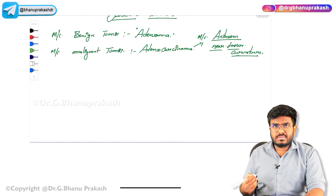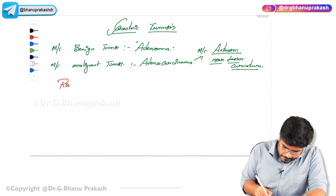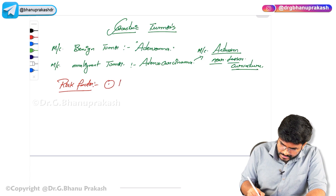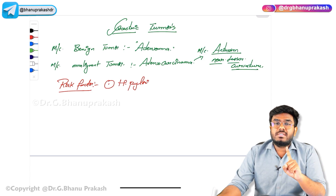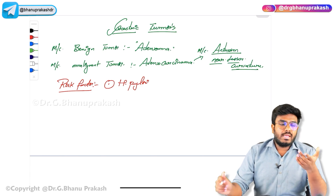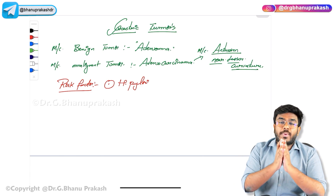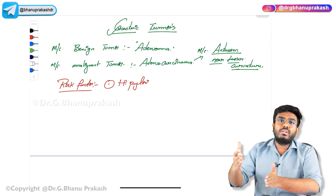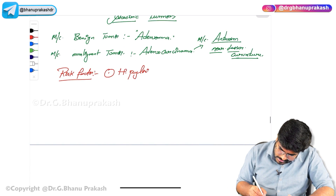Let's discuss why cancer occurs in the stomach — the risk factors. The number one risk factor is H. pylori. This bacteria, H. pylori, causes type B chronic gastritis, and that gastritis over time can lead to gastric adenocarcinoma. Next risk factor is smoking.